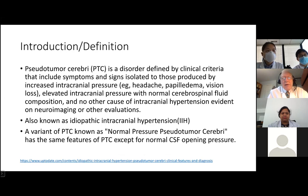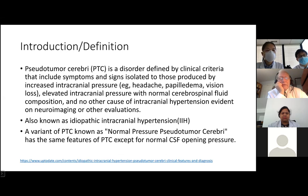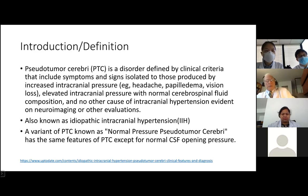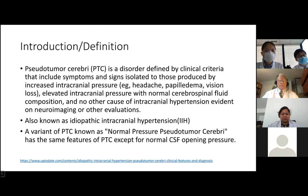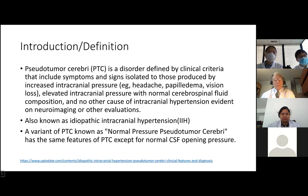Pseudotumor cerebri is a disorder defined by clinical criteria that includes symptoms and signs isolated to those produced by increased intracranial pressure, such as headache, vision loss, and papilledema. It also has elevated intracranial pressure with normal CSF composition, and there is no other cause of intracranial hypertension on neuroimaging. It's also known as idiopathic intracranial hypertension. A variant is known as normal pressure pseudotumor cerebri, which has the same features except that it has a normal CSF opening pressure.